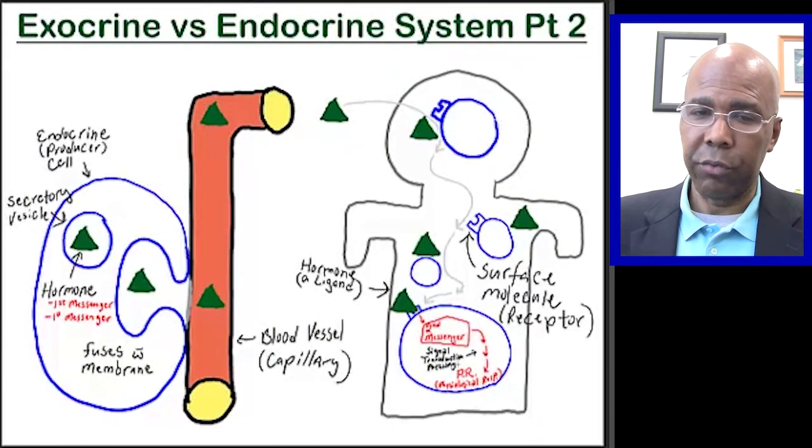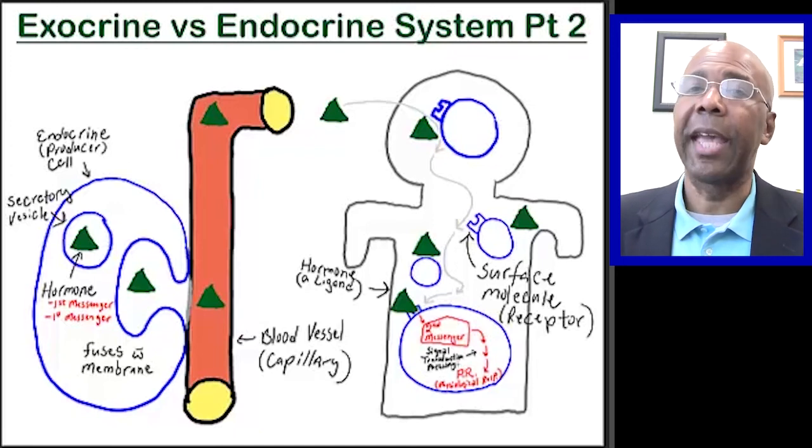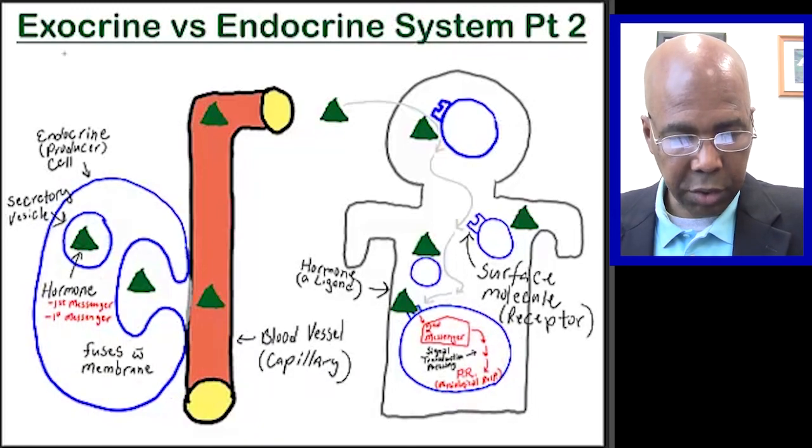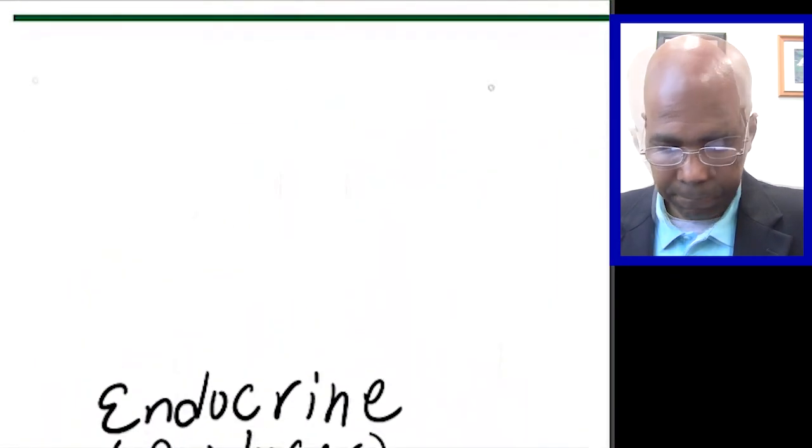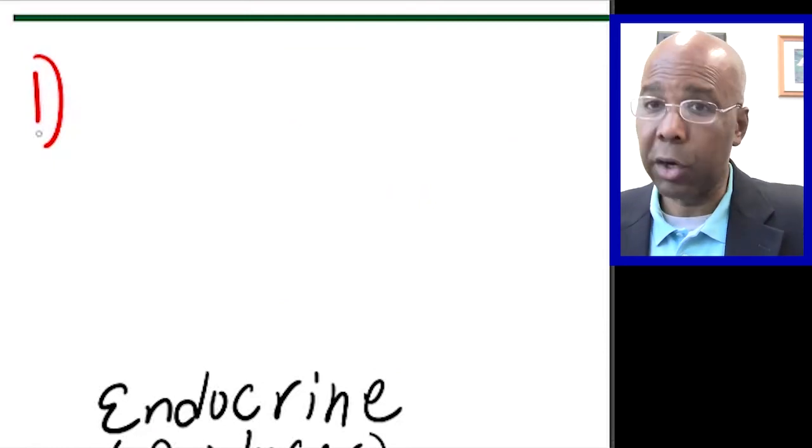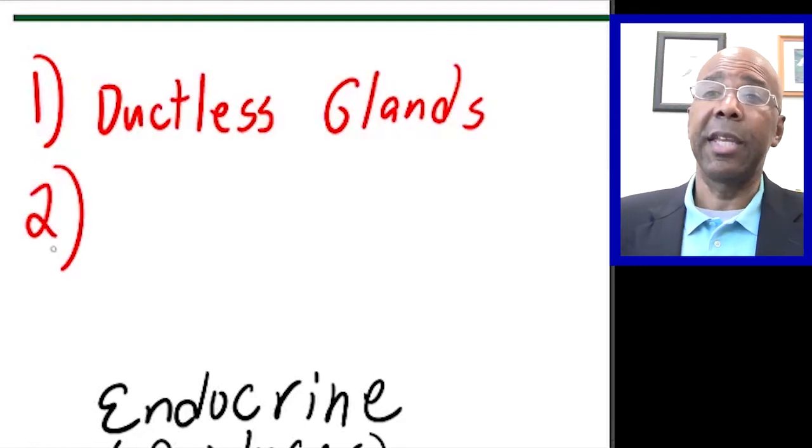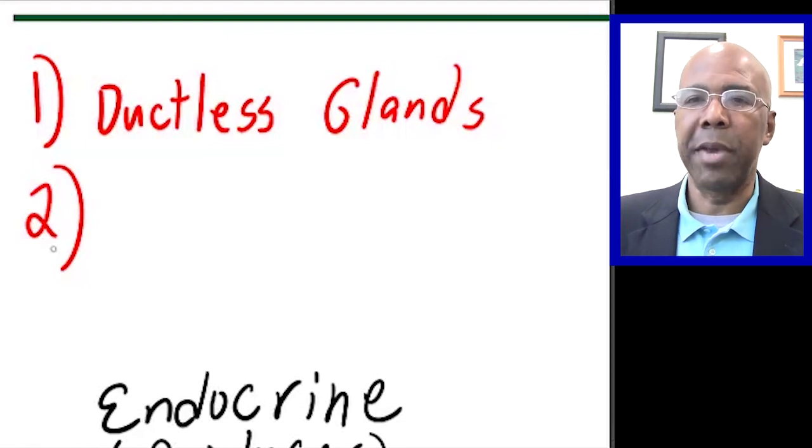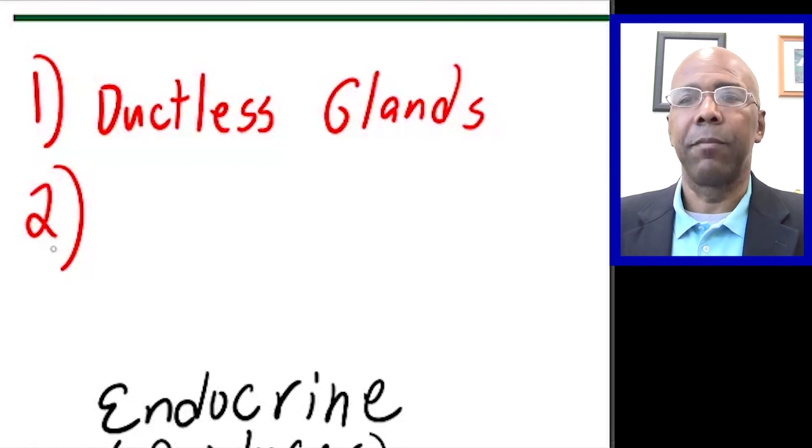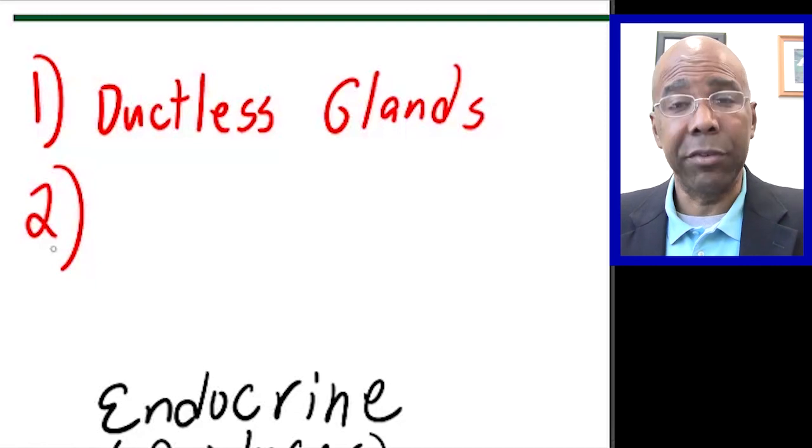So basically, this is the overview of the endocrine system. What's the difference between the endocrine system and the exocrine system? Let's indicate those two differences here. First, in the endocrine system, the glands themselves are ductless. There are no ducts, as in the exocrine system. Secondly, in the endocrine system, the chemicals that are produced are messenger chemicals. They pass into the bloodstream, go to a target at a distant site, and exert their action on a target cell.